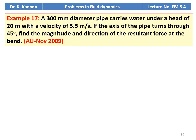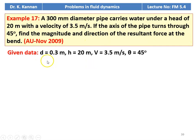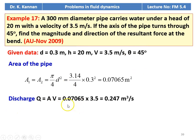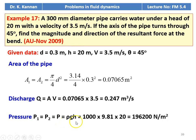Example number 17 from the November 2009 question paper: a 300-millimeter diameter pipe carries water under a head of 20 meters with a velocity of 3.5 meters per second. If the axis of the pipe turns through 45 degrees, find the magnitude and direction of the resultant force at the bend. D = 0.3 m, head = 20 m, V = 3.5 m/s, θ = 45°. Area A1 = A2 = π/4 × 0.3² = 0.07065 m². Q = 0.07065 × 3.5 = 0.247 m³/s. Pressure P1 = P2 = ρGH = 1000 × 9.81 × 20 = 196,200 N/m².